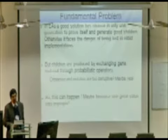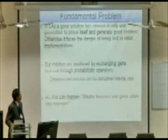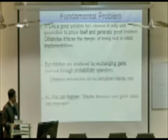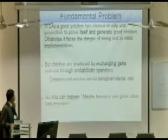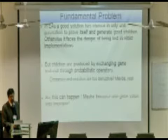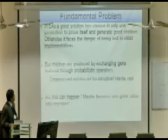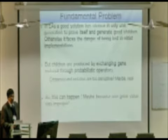The fundamental problem in evolutionary algorithms is that each solution has only one chance to prove itself. Otherwise it gets knocked out when you select only the fitter amongst the children to become parents in the next generation. But children are produced by exchanging gene materials to probabilistic operators. So it can happen that one or two genes are misplaced and therefore your potentially good solution gets knocked out of the evolution process.